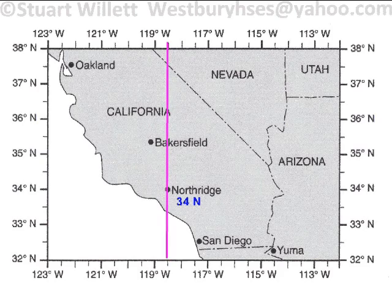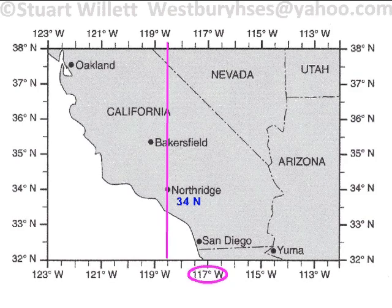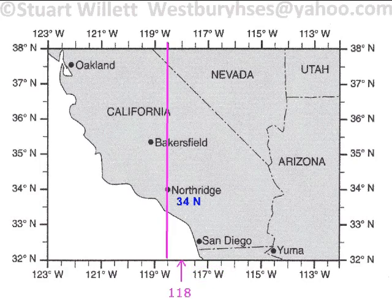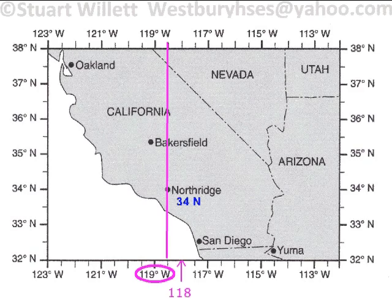Now I'm highlighting the vertical line through Northridge, and you can see it's not quite on 119 degrees west. Here's 117 degrees west; halfway between would be 118, and then half of that would be 119. So this is much closer to halfway between 118 and 119 degrees.